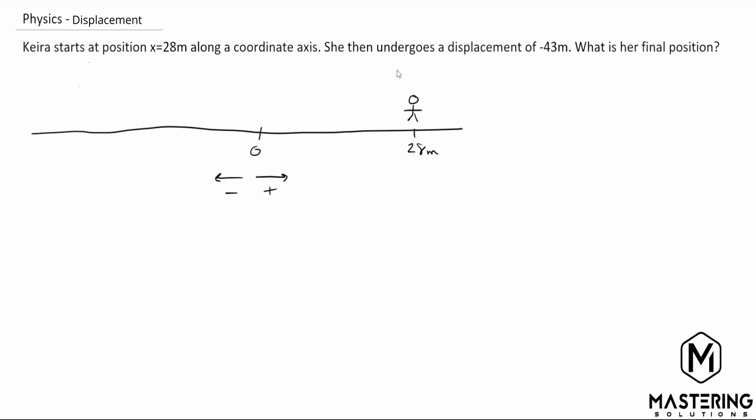So Kira undergoes a displacement of 43 meters, meaning she went from this direction 43 meters that way.